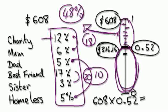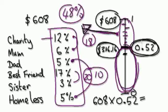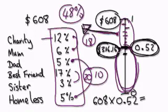So basically, you've given away 48% in total. What's left is 52%, and at that level it would be $316.16.